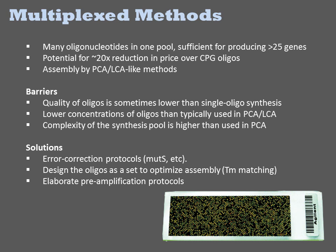There are various approaches to remedying these issues, including error correction protocols involving mutation-detecting enzymes like MutS, the biasing of the design of the oligos to be more amenable to this type of assembly, and elaborate preamplification protocols and emulsion methods to deal with the complexity of the reaction.